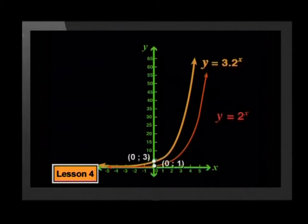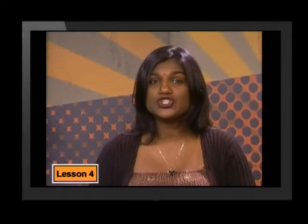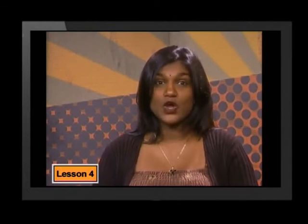Look at the y-intercepts. The point 0, 1 on the parent graph has become 0, 3 on the new graph. So the y-intercept of 3 is the same as the value of a for the new graph. This is an interesting change from the other families of graphs we have studied — with those graphs, changes to the a-value did not affect the y-intercept. Here it is different. We will look at this again later in the lesson.